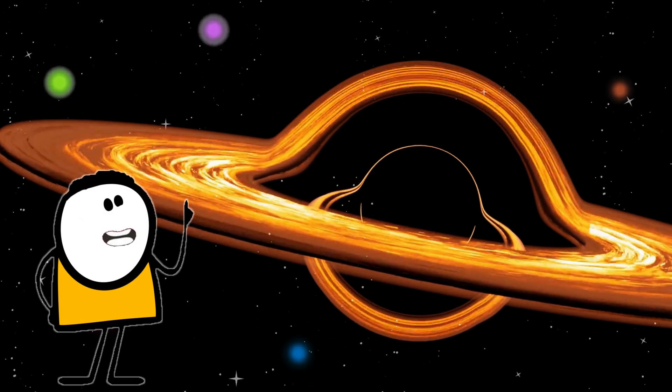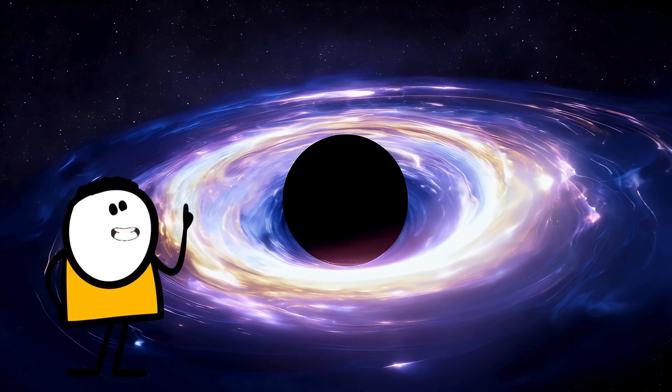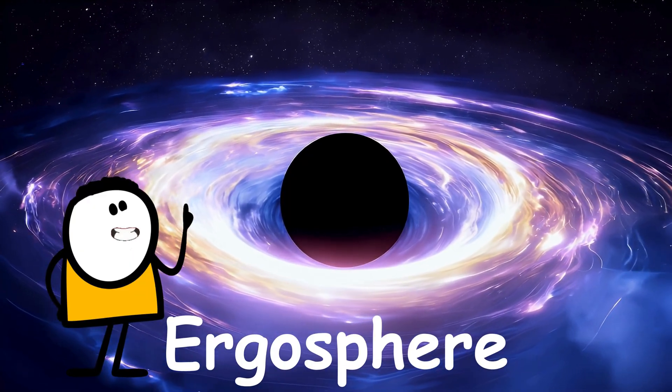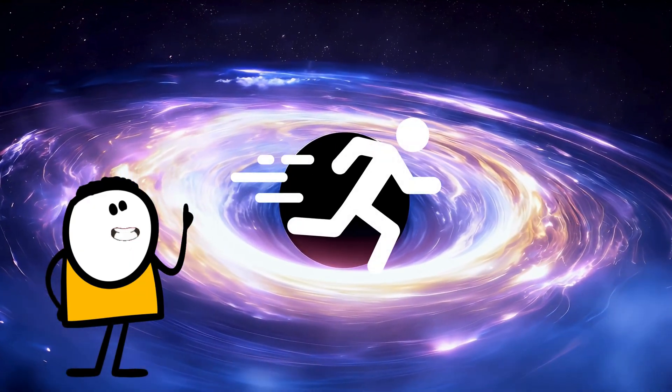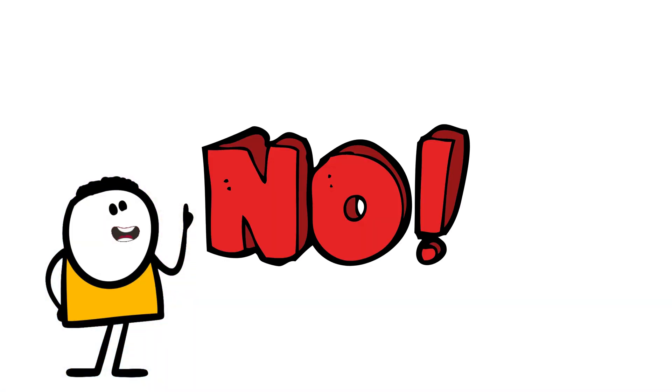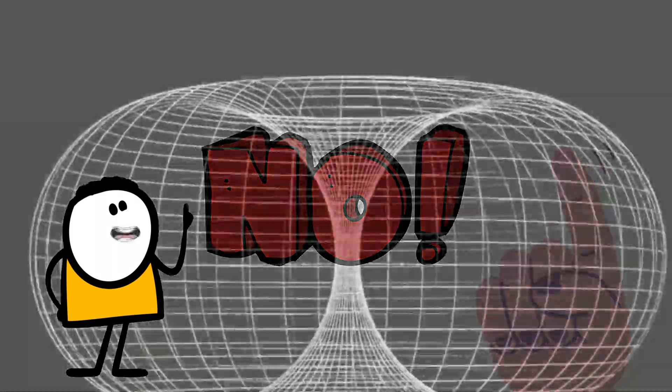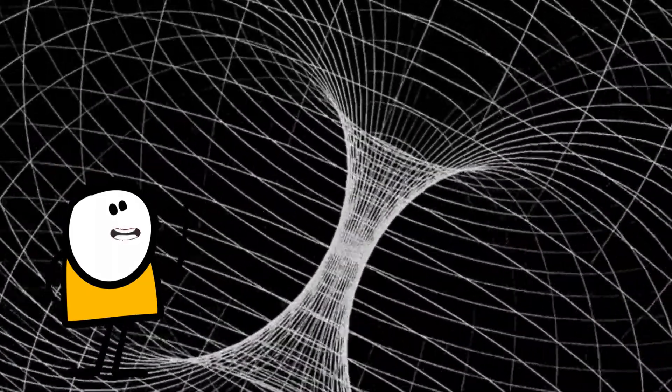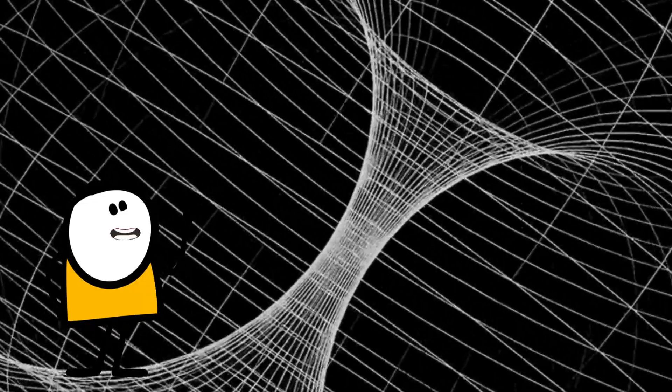As the black hole spins, it drags space-time around with it. This creates a region called the ergosphere, a cosmic whirlpool you can't escape. Even light is pulled into orbit. Try to stay still here? Nope. Not happening. The fabric of the universe itself is being twisted into a cosmic tornado.